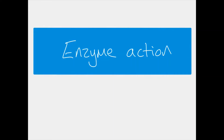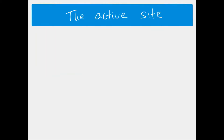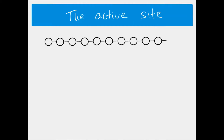In this video we're going to look at the basics of enzyme action. First of all we're going to think about the active site. We need to remember that an enzyme is a sequence of amino acids, and that sequence is quite irregular — there's no repeating pattern, the amino acids appear in a fairly irregular fashion. The sequence would be different for each enzyme.